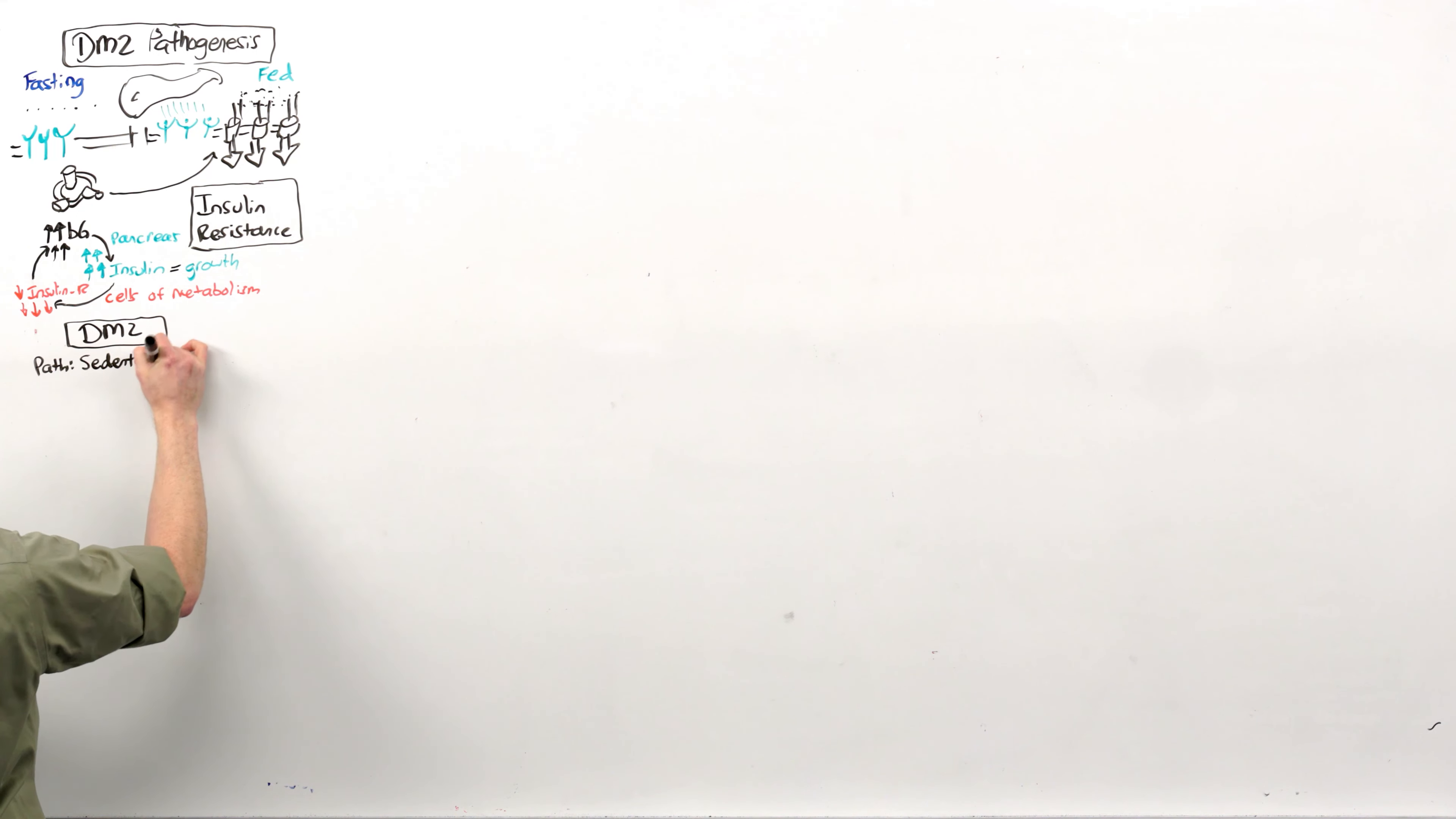Sedentary lifestyle and excess calories, usually resulting in obesity. Not all of these have to be present, but this is the zero standard deviations from the mean classic illness script. Leads to chronically elevated blood glucose, which leads to chronically elevated insulin. Type 2 diabetes is a hyperinsulinemic state and hyperglycemia.